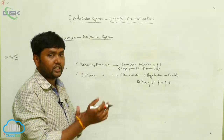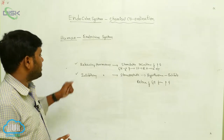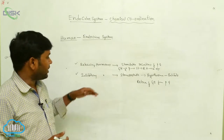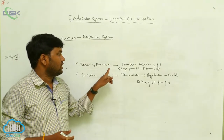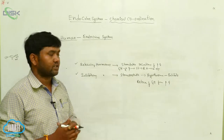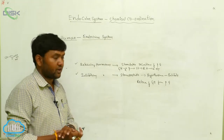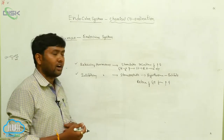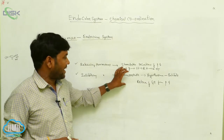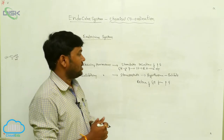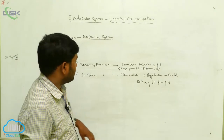The second type is inhibitory hormones, which inhibit the secretions of the pituitary gland. An example is somatostatin, secreted from the hypothalamus, which inhibits the release of growth hormone from the pituitary gland.